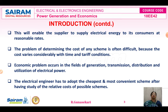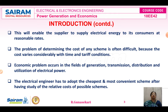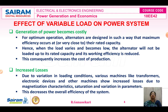The power system consists of three parts: one is the generation part, another one is the transmission part, and another one is the distribution part. So the economic problem occurs in the field of generation, transmission, distribution, and utilization of electric power. The electrical engineer has to adopt the cheapest and most convenient scheme after studying the relative cost of the possible schemes. This is the introduction to economics.